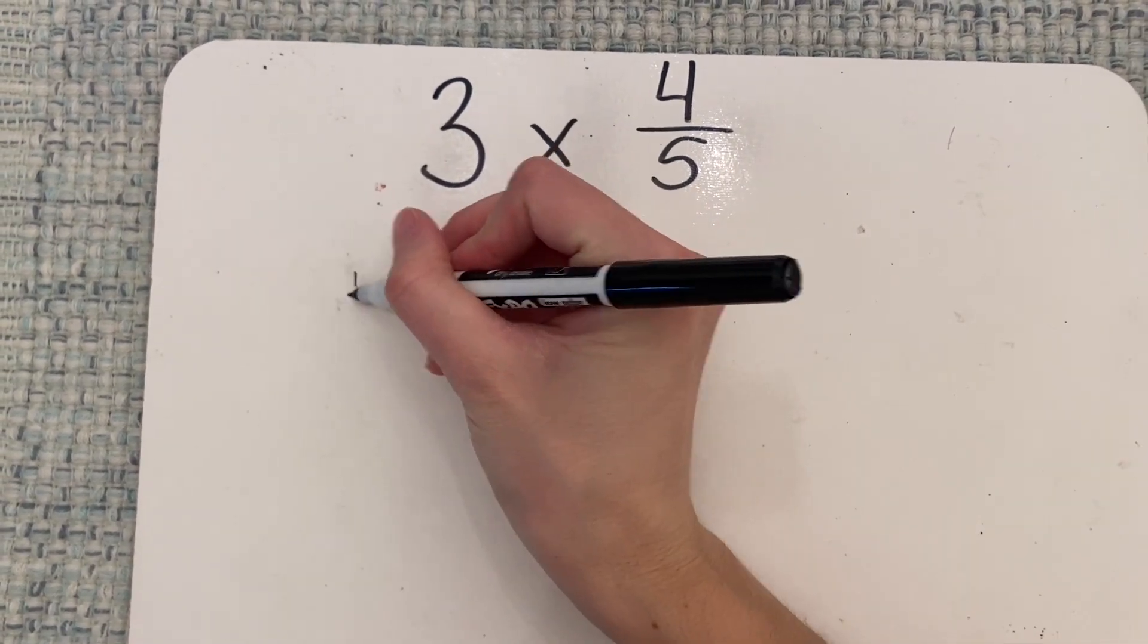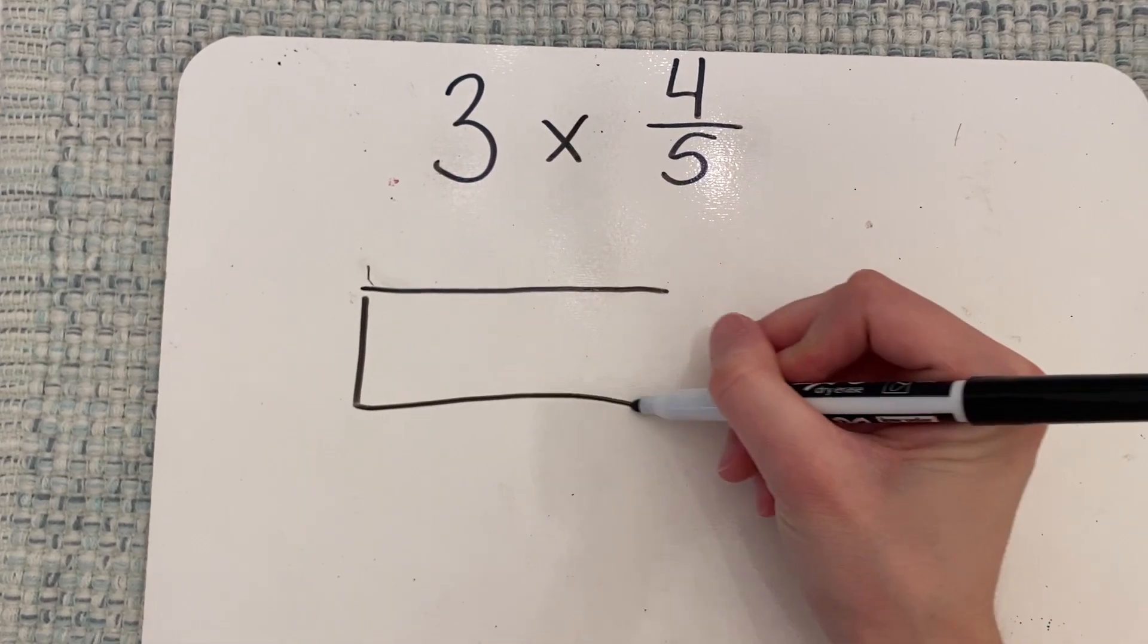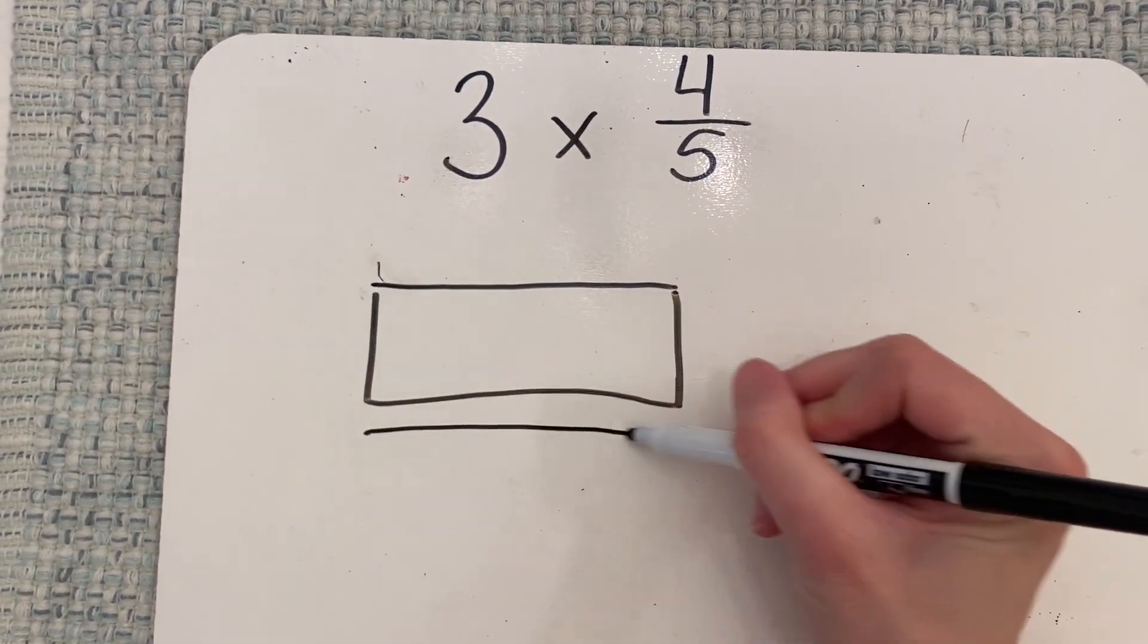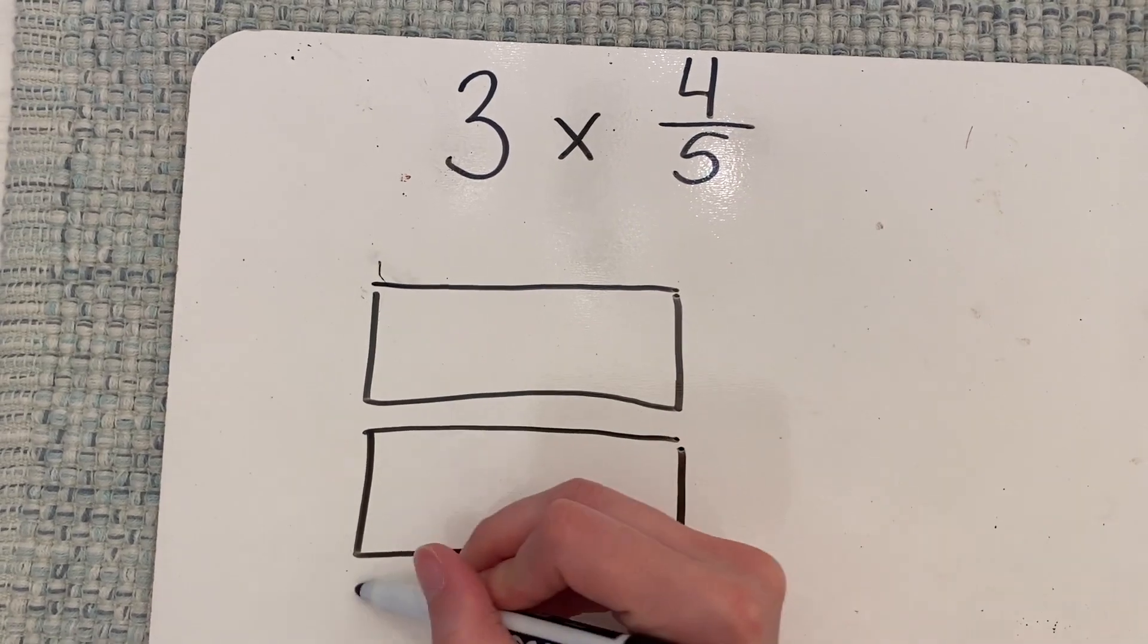So what we do when we solve with a model is we're going to draw three boxes, three wholes, to show our whole number.